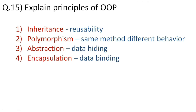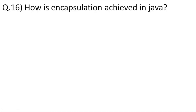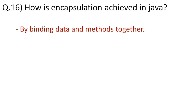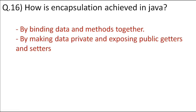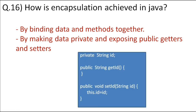Finally, the fourth principle is encapsulation, in which we bind the data and methods into one capsule. It is an important feature to prevent direct access to data. Encapsulation is achieved by making data private and exposing public getters and setters. By making data private, we don't allow direct access or changes to data. We can restrict access as needed — if you don't want anyone to change your data, don't provide setter methods. In this way, you have control over the data.